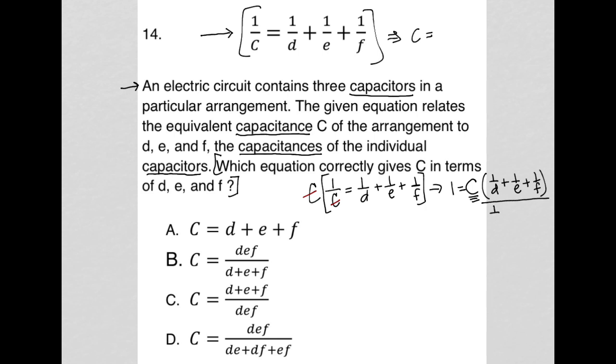So now what I can do is divide both sides by what's inside the parentheses here. So 1 over D plus 1 over E plus 1 over F. I divide both sides of my equation by that. So it crosses out on the right-hand side. And in essence, I'm just about done because I have now C alone, and then I have 1 over 1 over D plus 1 over E plus 1 over F.